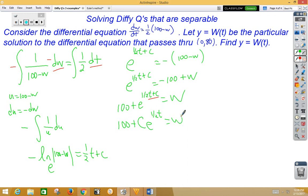Well now we can go ahead and plug in our (0,80), so we get 100 plus Ce to the 0 equals 80. And remember, anything to the 0 power is 1, so that would make c negative 20.